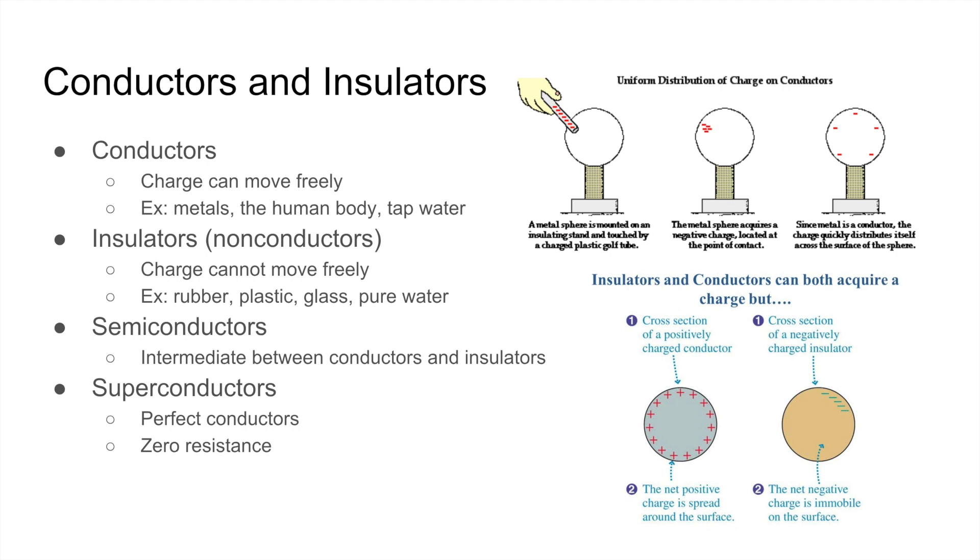Meanwhile, in insulators, charge cannot move freely. For example, rubber, plastic, glass, or pure water. And sometimes charge won't be uniformly distributed, and it might only be on one spot. But for this course, it's usually uniformly distributed.